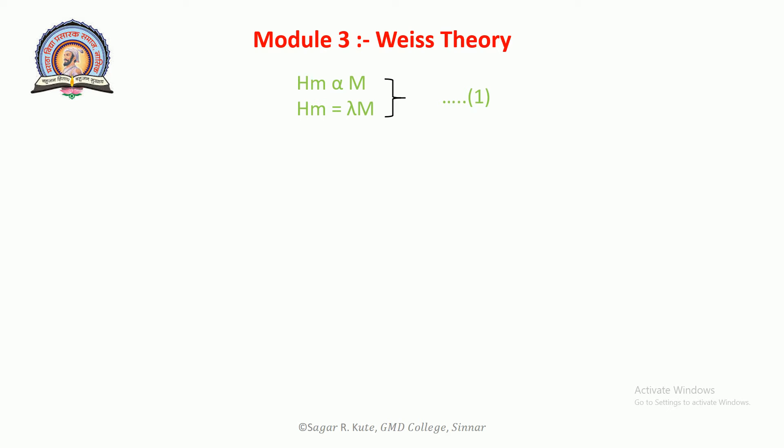If H is the strength of external magnetic field applied to the ferromagnetic substance, then the resultant field or effective magnetic field, H_effective equals H plus lambda M. This is equation number 2.